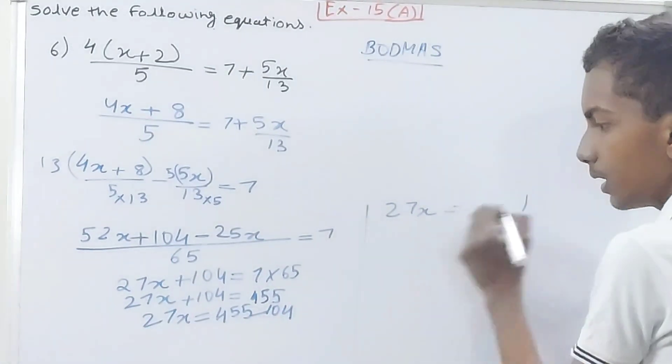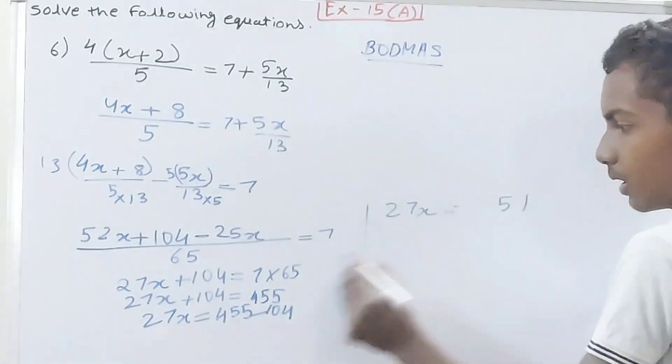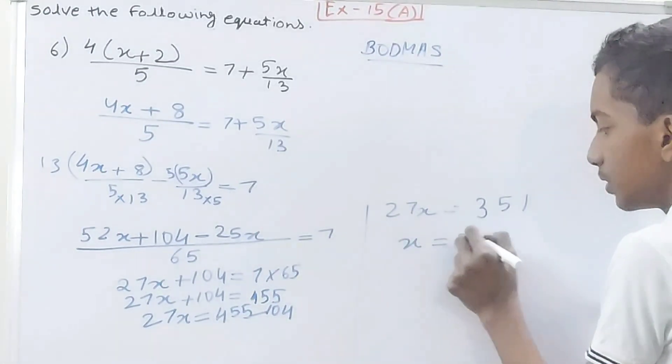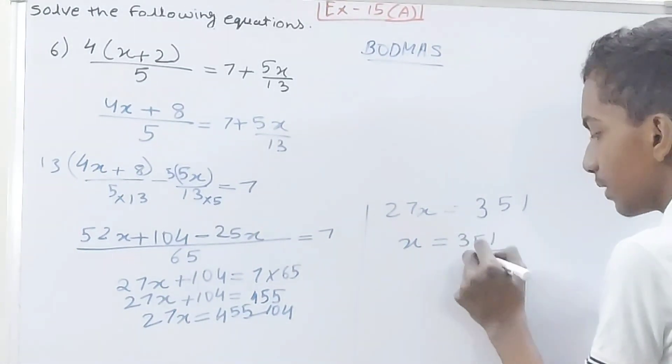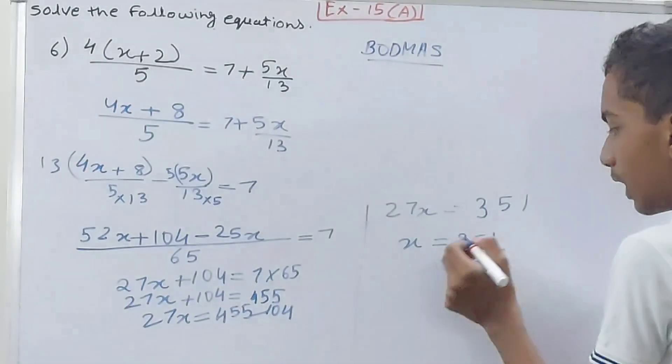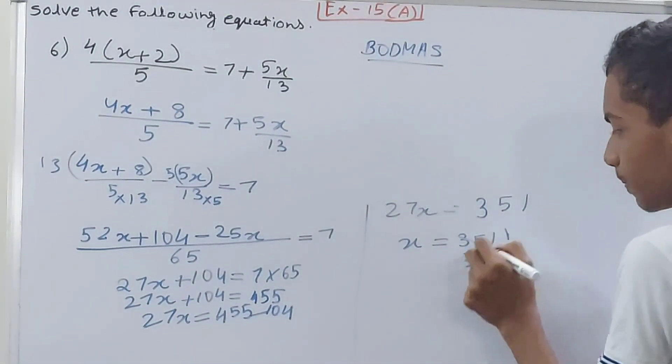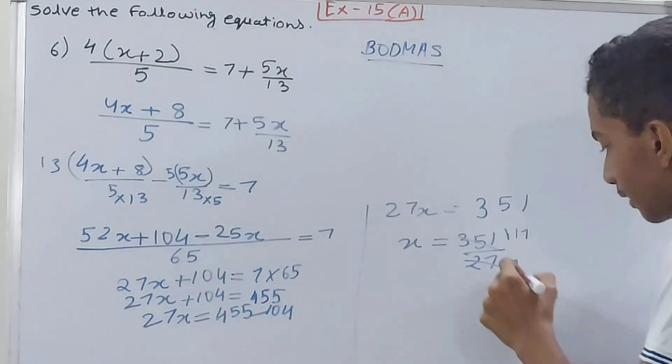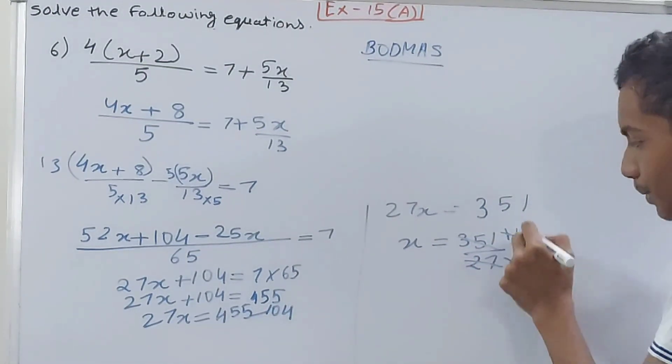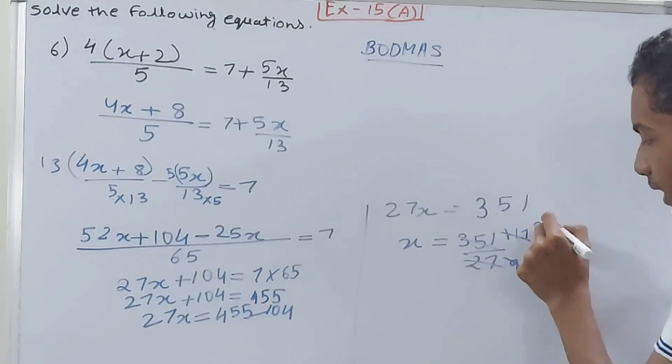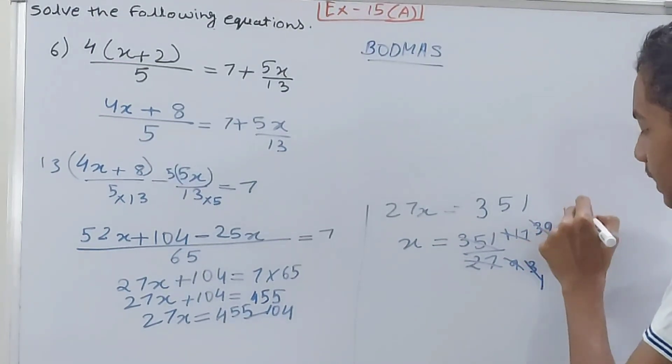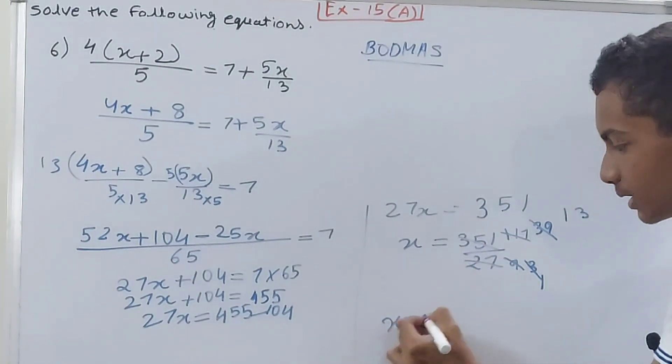351 by 27, cancel. How many times? See, this will go 9 times, this will go 1, 117. I'm cancelling it by 3. So I'll have, again cancel by 3, 3 times 9 is 27, 39 times 3 is 117, and again I cancel by 3, 1 and 13 times. So your x is equal to 13.